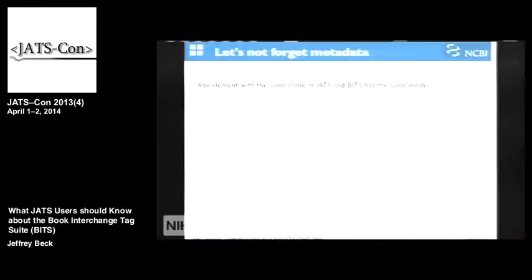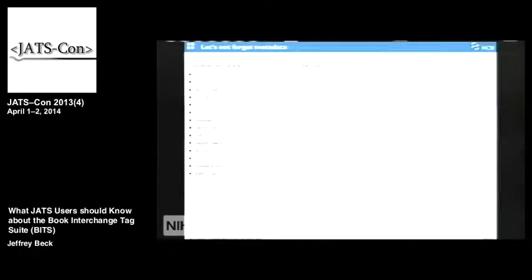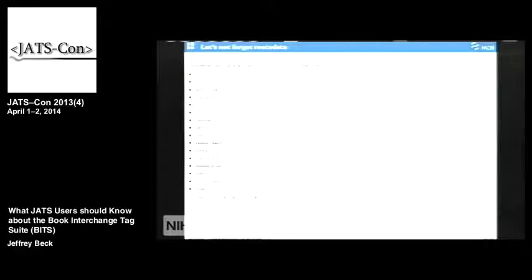Any element with the same name in JATS and BITS has the same model — with some asterisks. Elements like subject-group, contrib-group, author-notes, pub-date, ISSN, ISSN-L, self-URI, trans-abstract, abstract, and funding-group: the statement isn't 100% true, but they're close enough that you're not going to have a problem with them. The elements with the same names are the same structure, even outside of body and back. These metadata elements you're getting essentially for free.